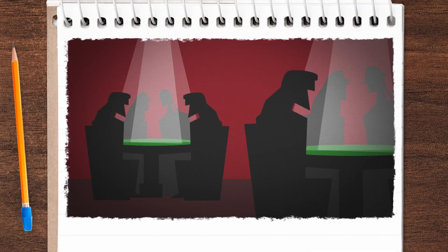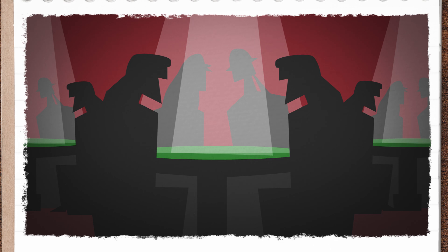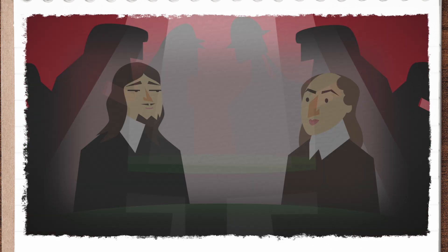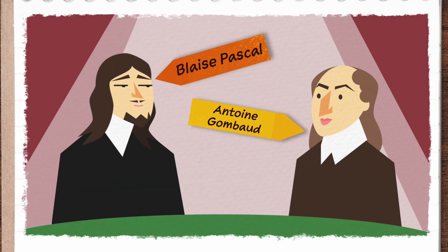With that in mind, maybe it's no surprise that the normal distribution first popped up in the context of gambling. In 17th century France, gambling was all the rage for the French nobility, and it left many of the biggest math-obsessed dudes of the time with a lot of questions about probability.